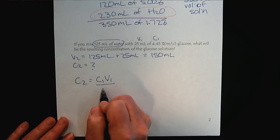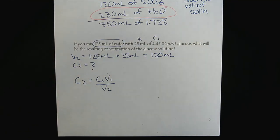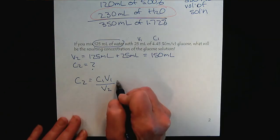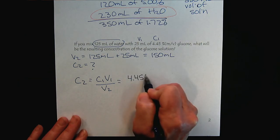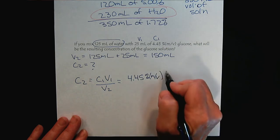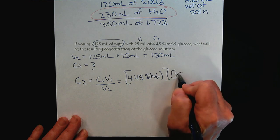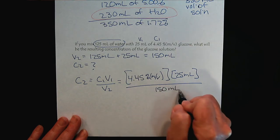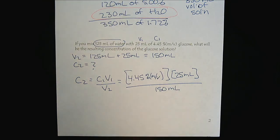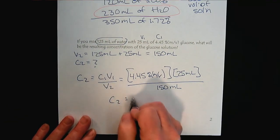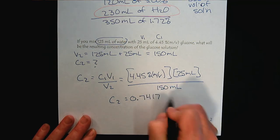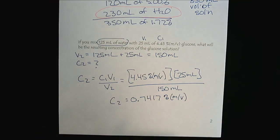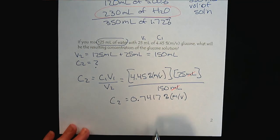We're back to our original equation. We've just rearranged it algebraically to solve for the new concentration. Now, we plug in the values from the question. There's our initial concentration and there is our volume. Our ultimate volume, when we've mixed everything together, will be 150 milliliters. We punch this data into our calculator. The new concentration would be 0.7417% mass over volume. In this case now, the milliliters cancel and we're left with concentration units.